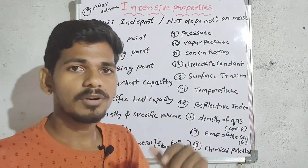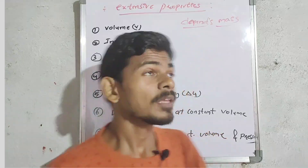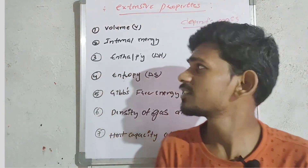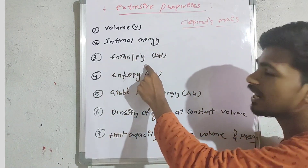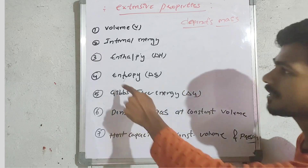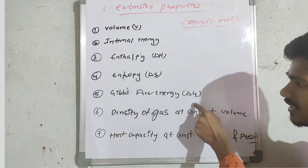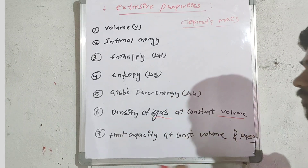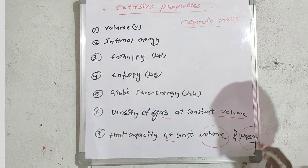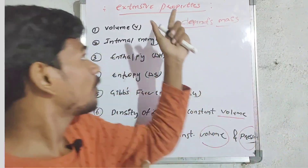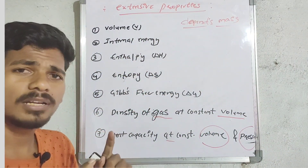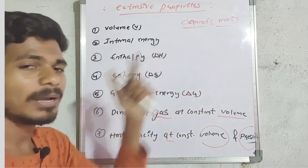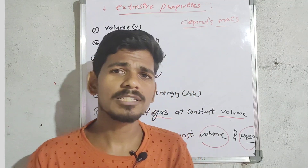Now extensive properties. Extensive properties are mass dependent, while intensive properties do not depend upon mass — they are mass independent. Extensive properties include: volume (V), internal energy, enthalpy (ΔH), entropy (ΔS), Gibbs free energy (ΔG), density of gas at constant volume, and heat capacity at constant volume and constant pressure.